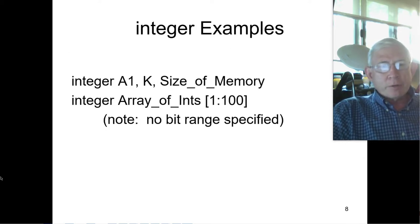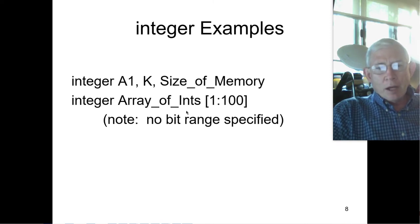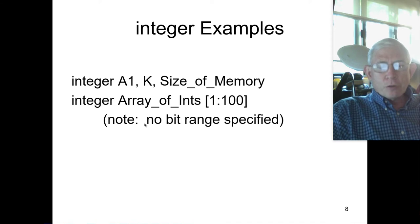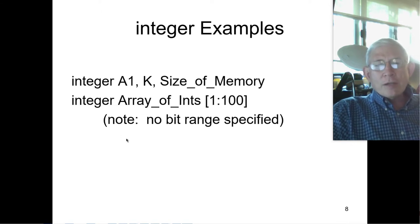Here are a couple of examples. Integer A1, K, and size_of_memory — that's three. Integer array of integers going from 1 to 100, so you have a hundred integers. There's no bit range specified; the specification goes on the right side of the variable, not on the left. And you can't specify the lower eight bits or something like that of the integer — that's not allowed.